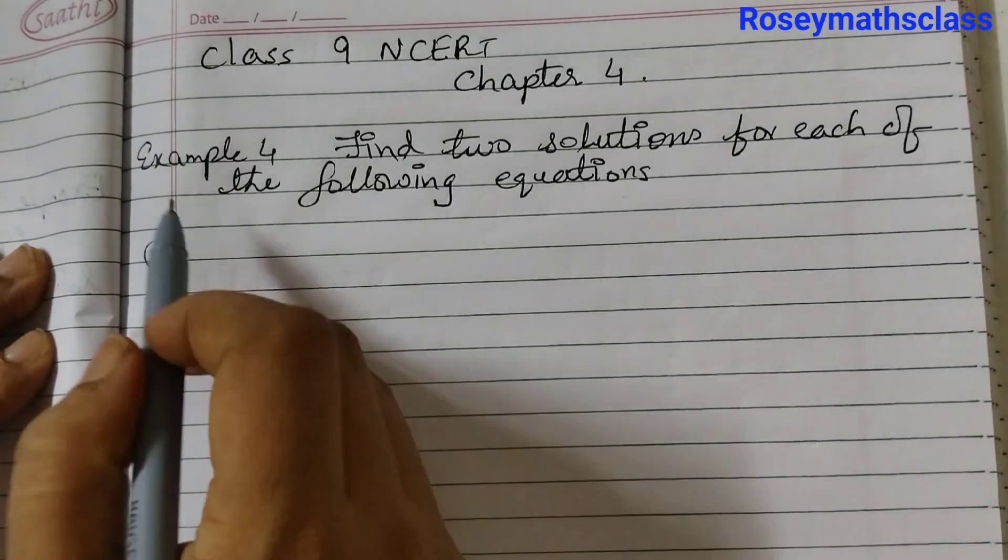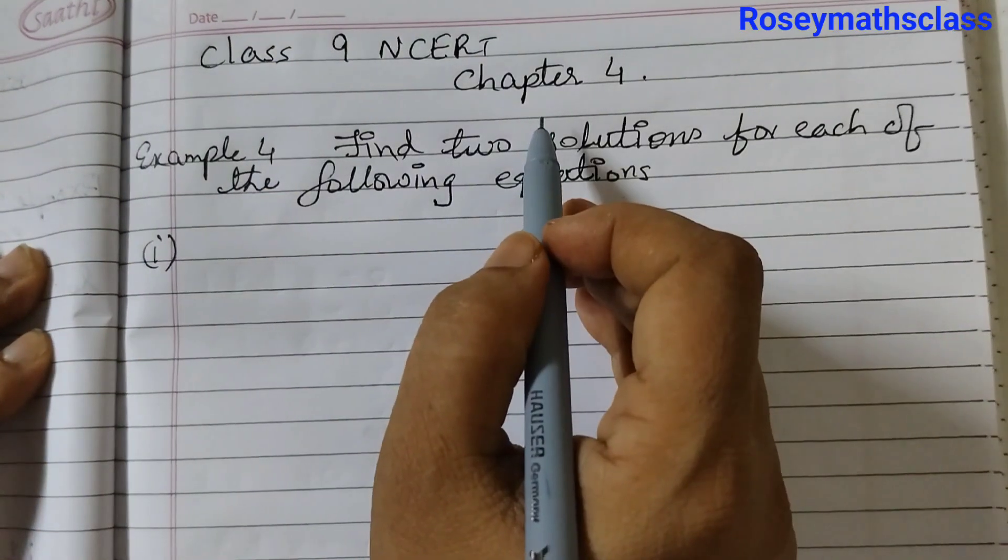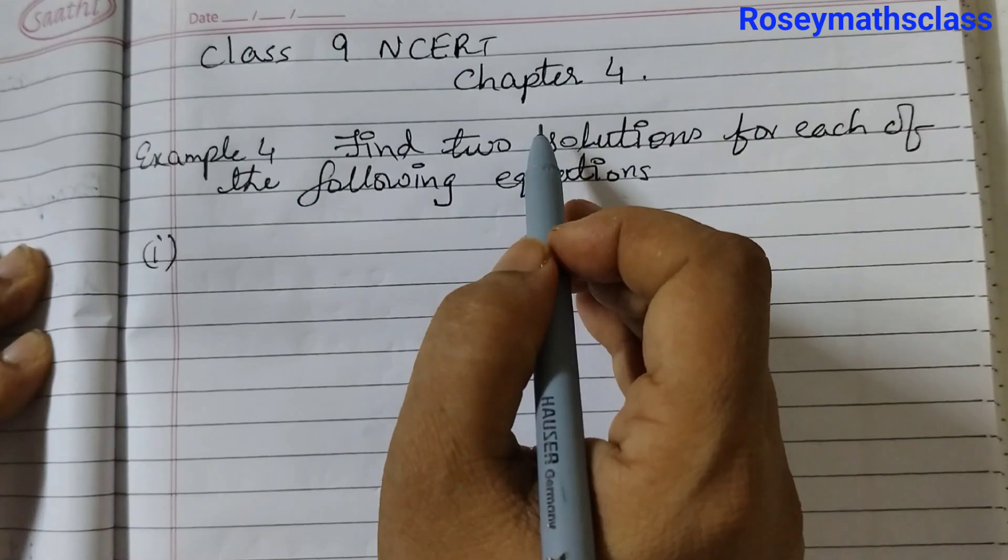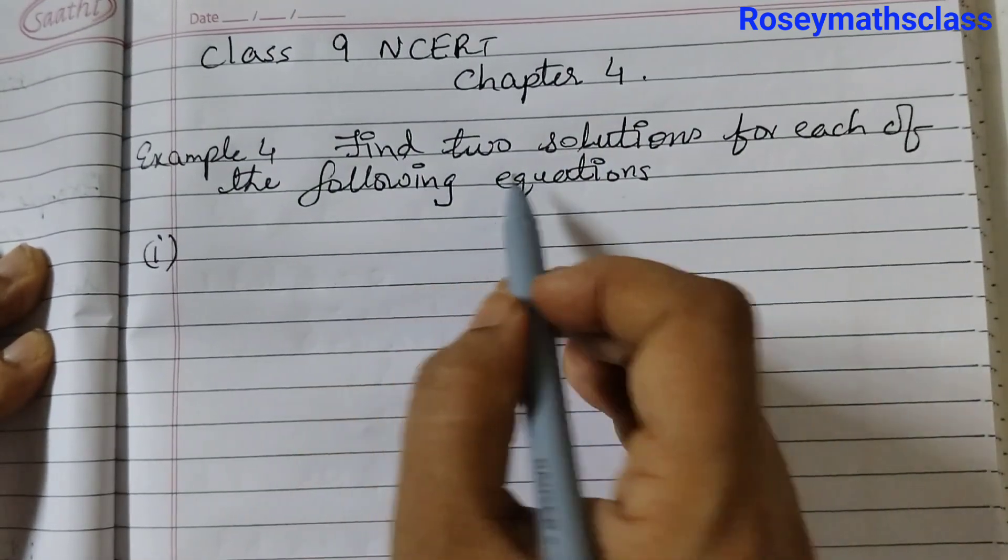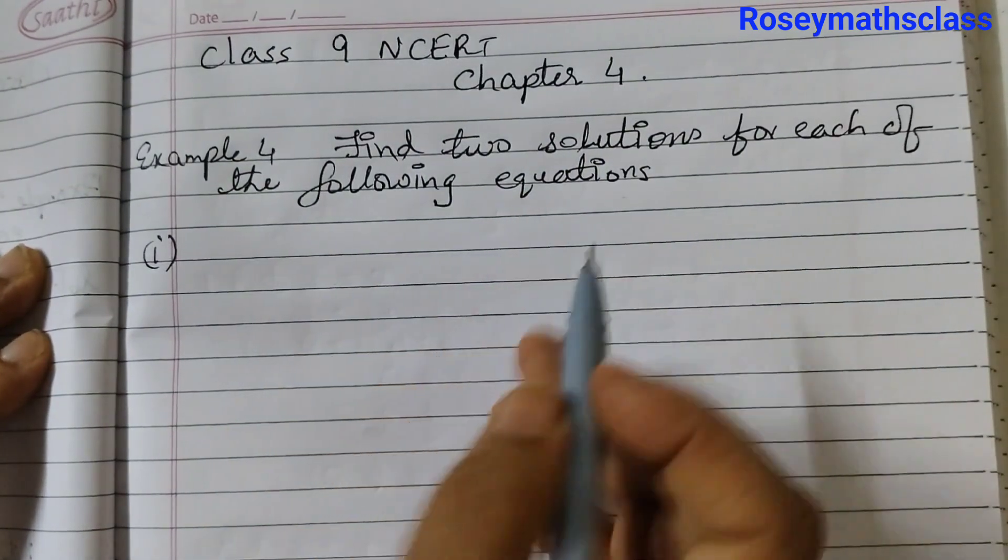Hello students, in this video we shall discuss example number 4 of chapter 4 linear equations in two variables. Find two solutions for each of the following equations.